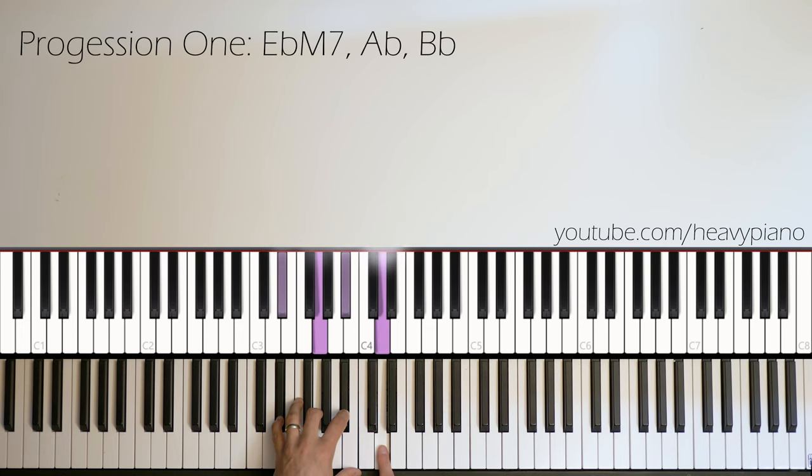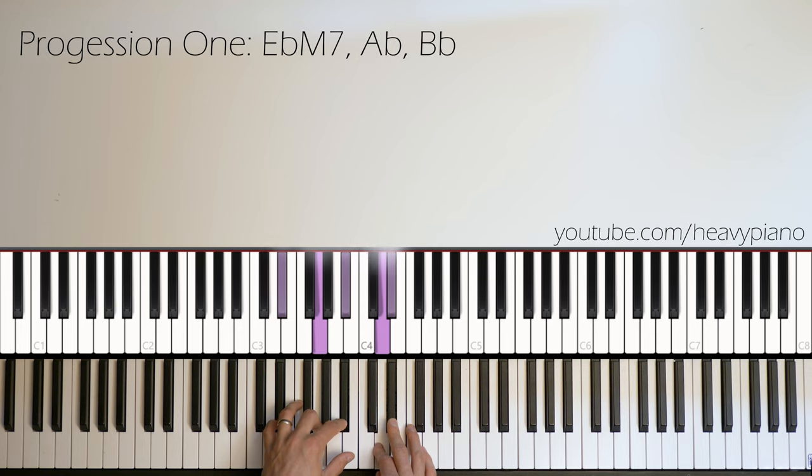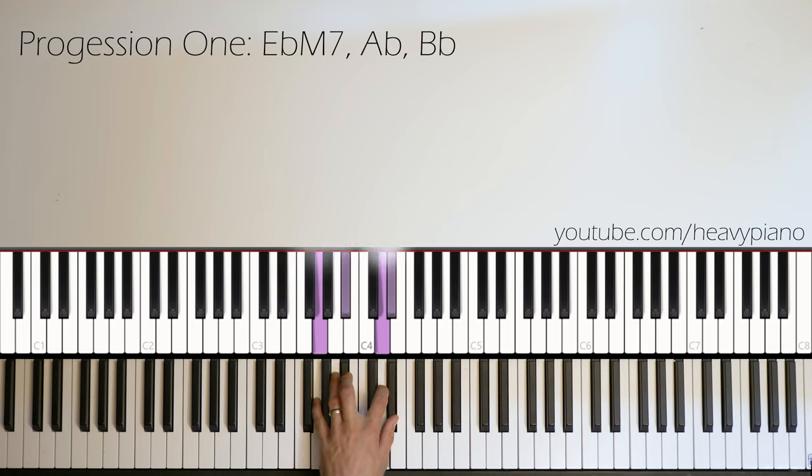There's an E flat major 7. Major 7 means you add that D natural. A flat major, B flat major, and it goes back to the E flat major 7 again. And the way I voiced it is I dropped the root out of the bass, and I kind of did this like first inversion on the G, and then I just kind of set the mood.